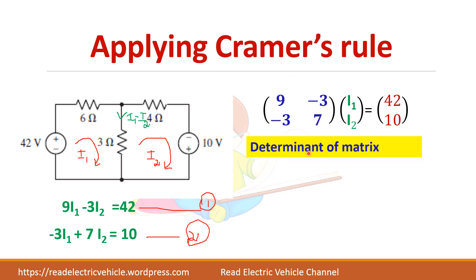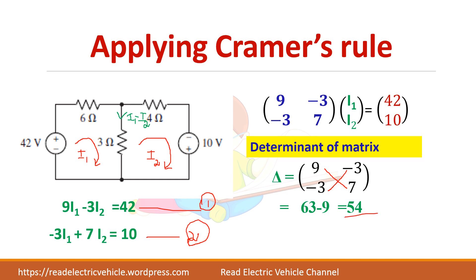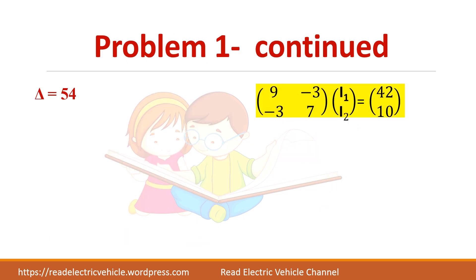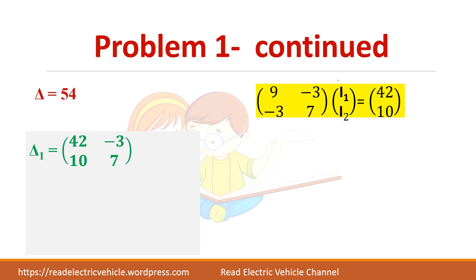Find the determinant of this matrix. Cramer's Rule is simple and easy, but you should be thorough in matrix operations. The determinant is 9×7 minus (−3×−3) = 63 − 9 = 54. So the determinant value for this matrix is 54. Now we have to find I1 and I2 one by one.